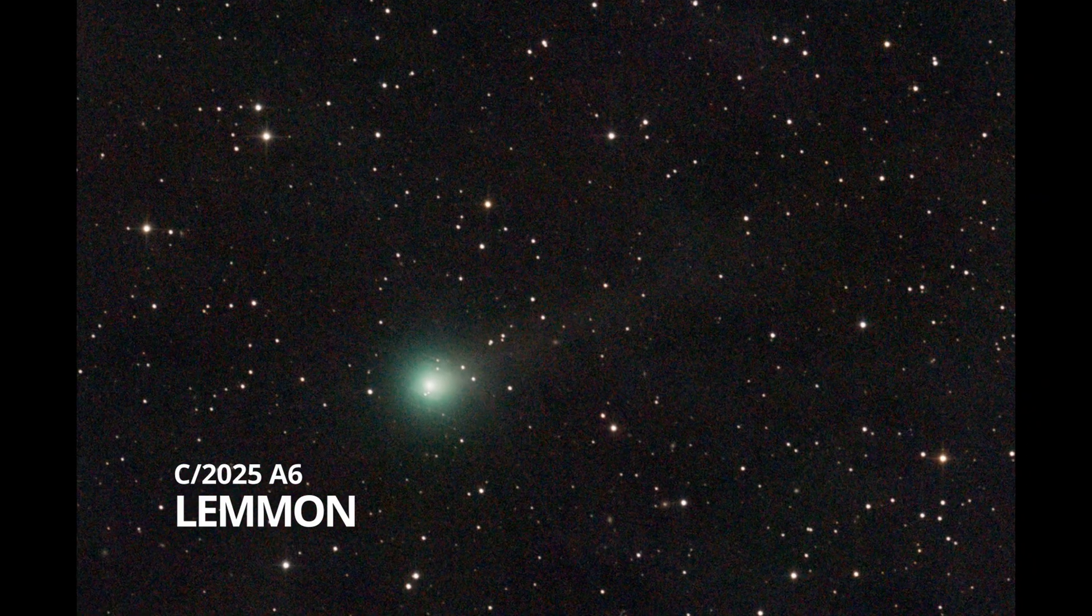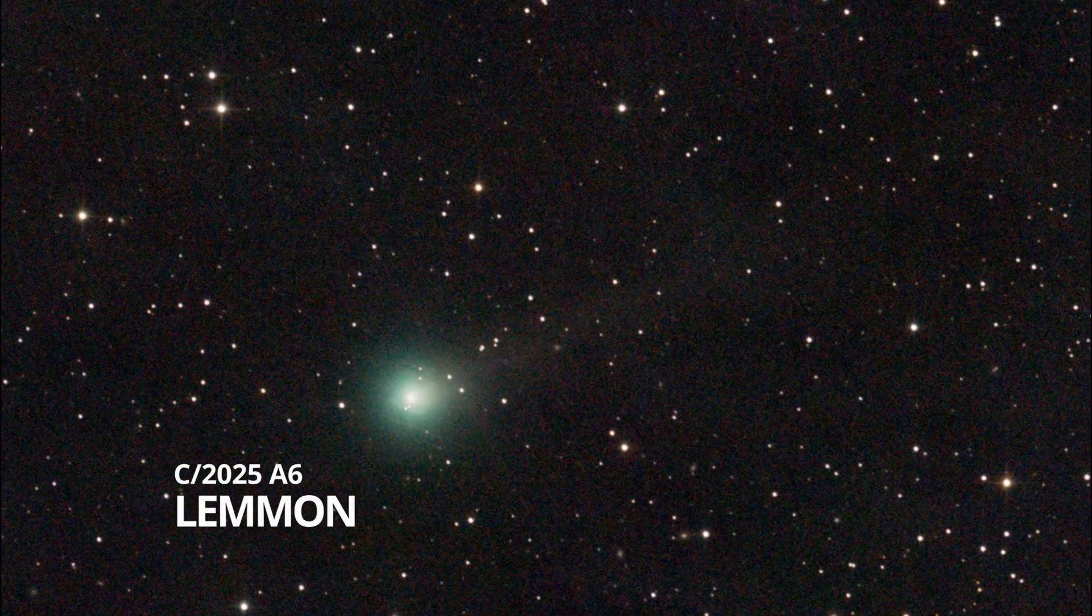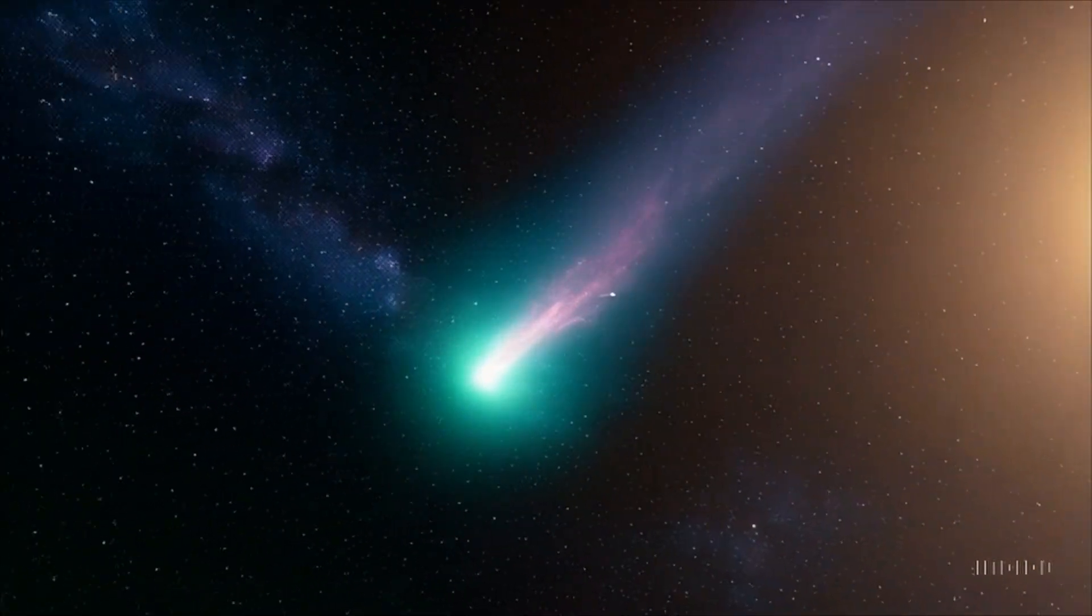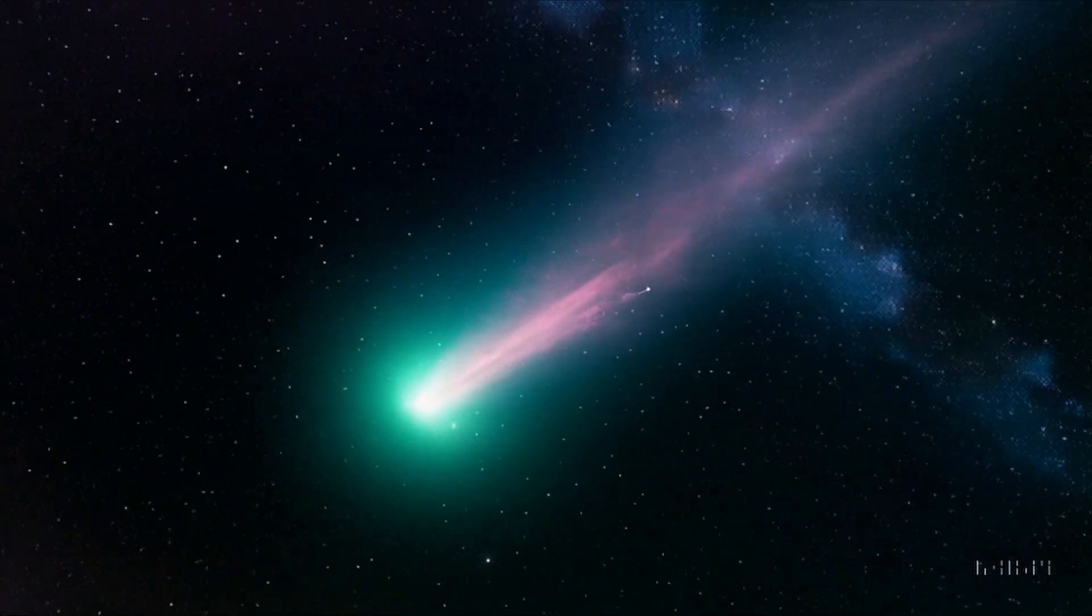In early November, C2025A6 Lemon, a beautiful green comet, is forecast to become bright enough to be seen with the naked eye from dark northern locations.